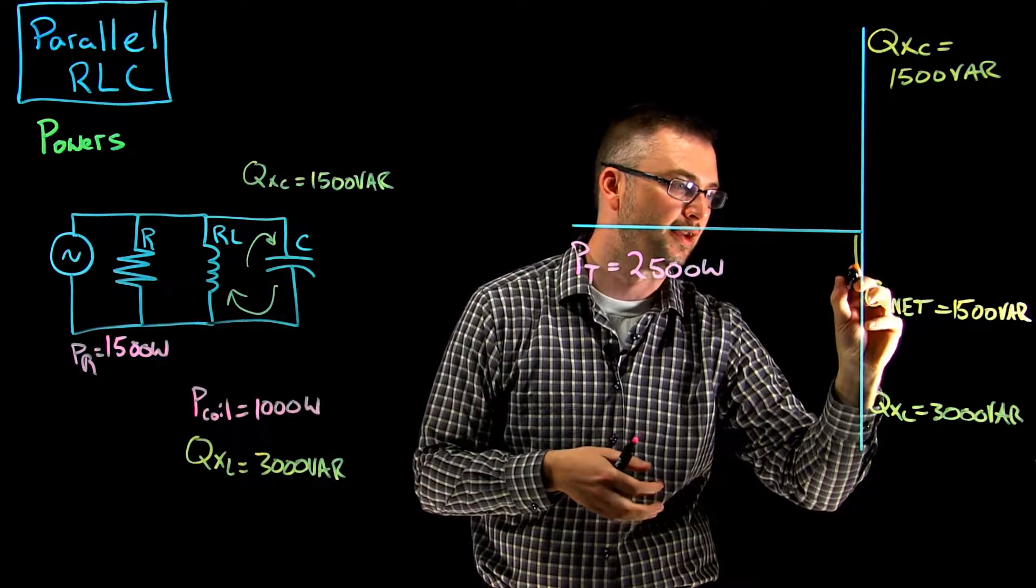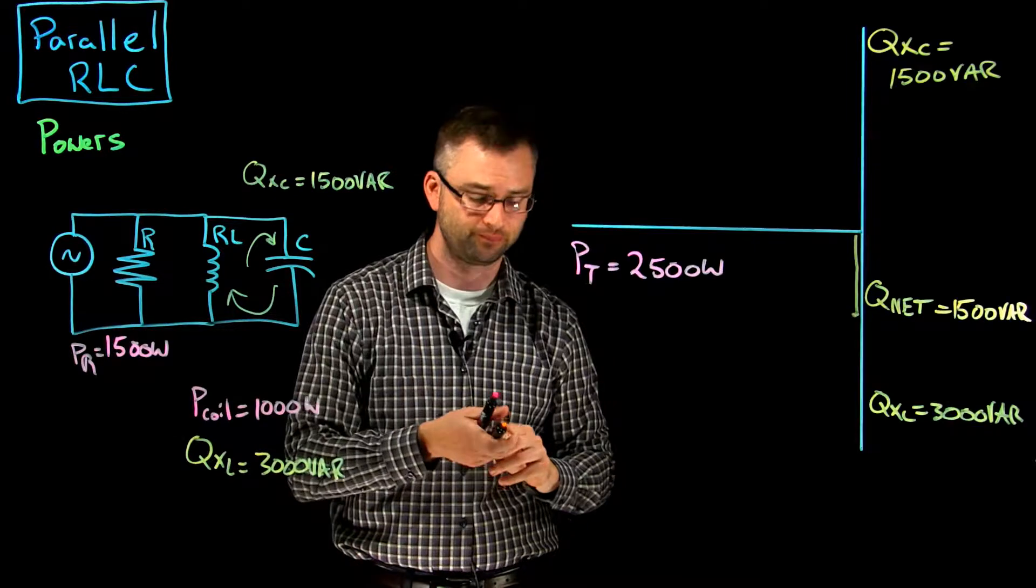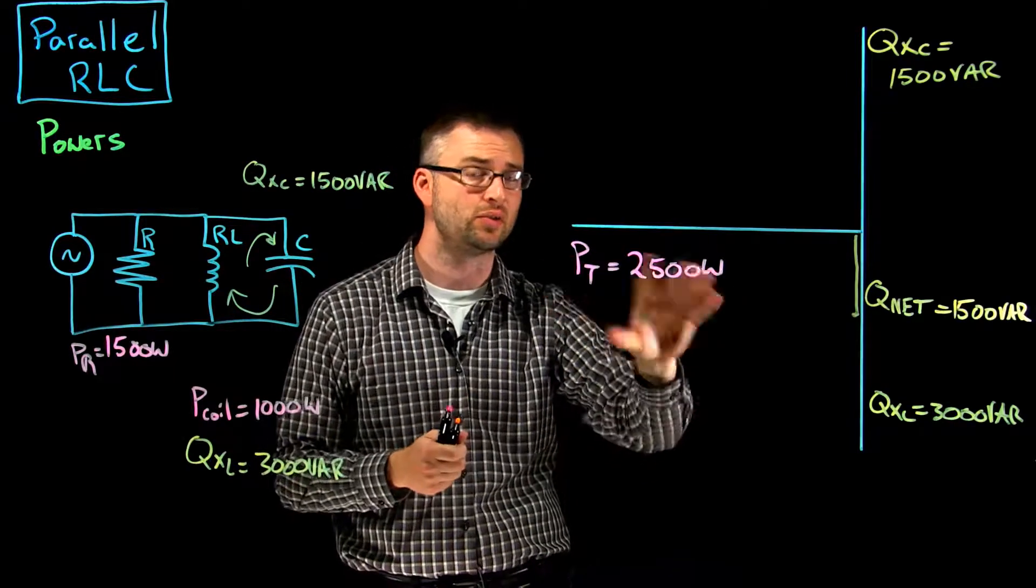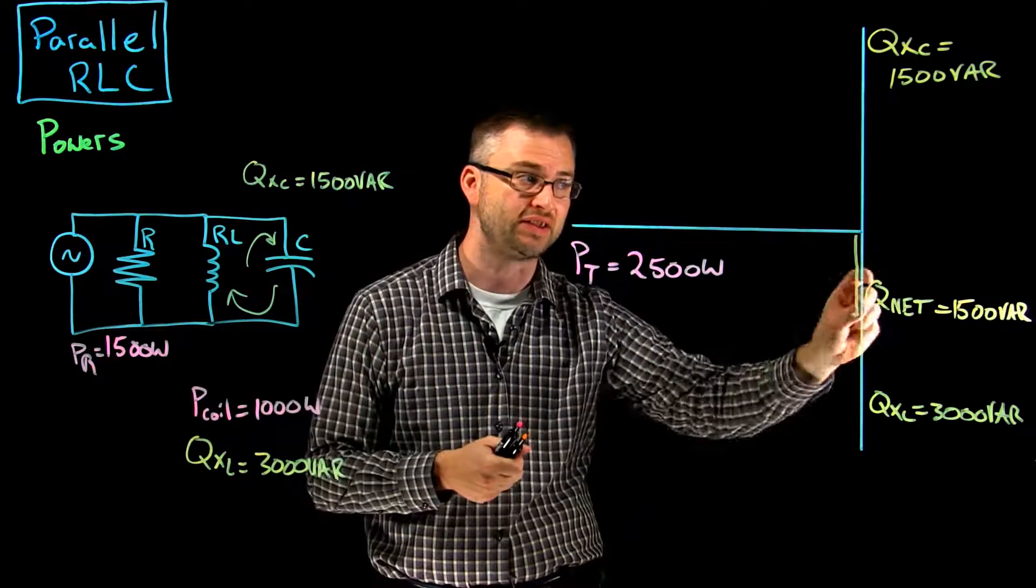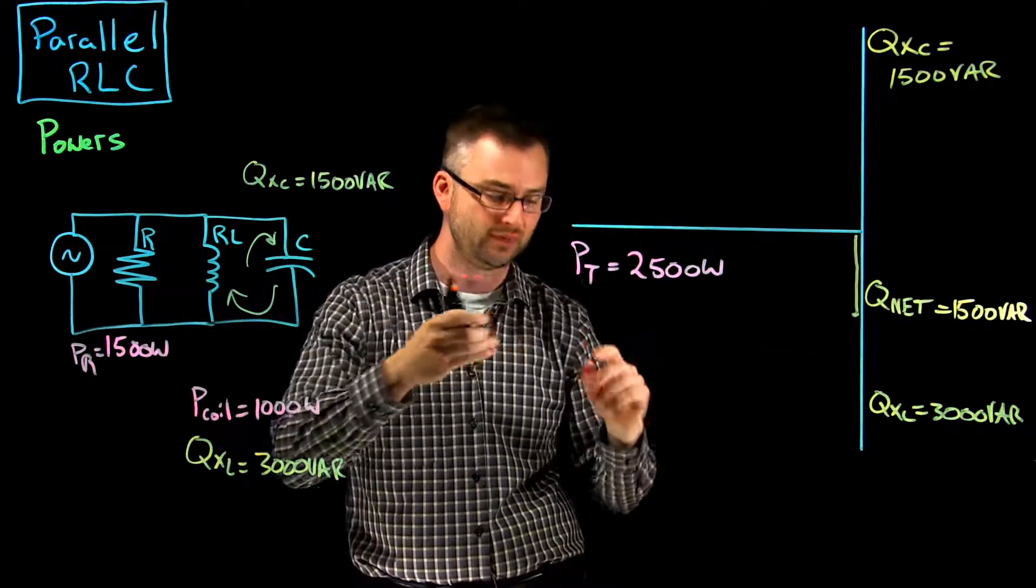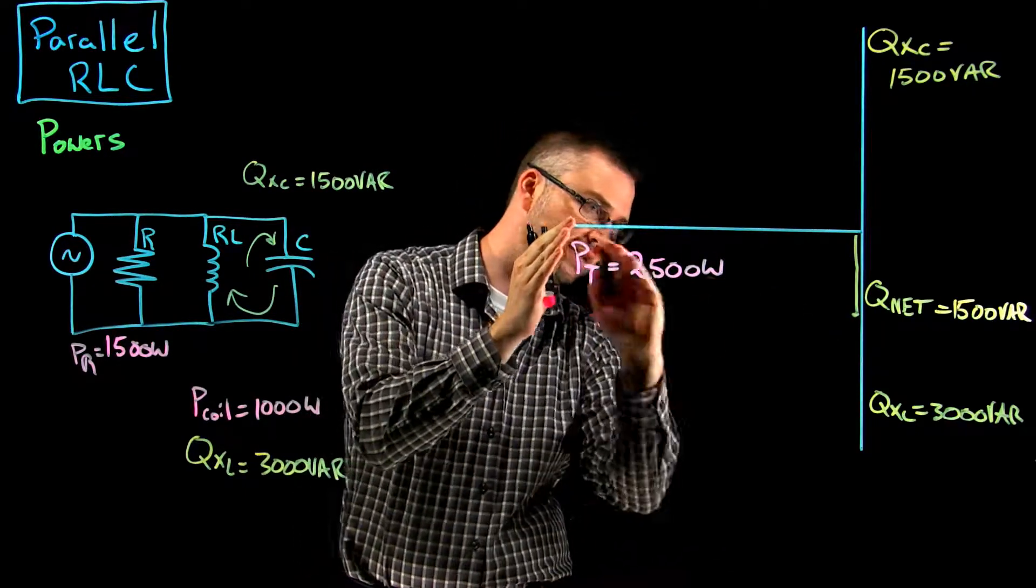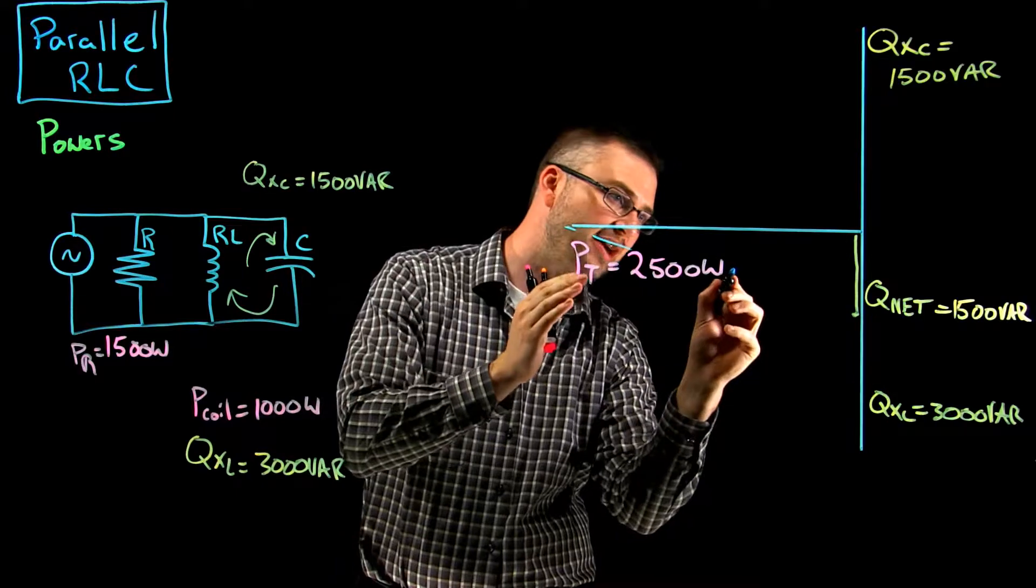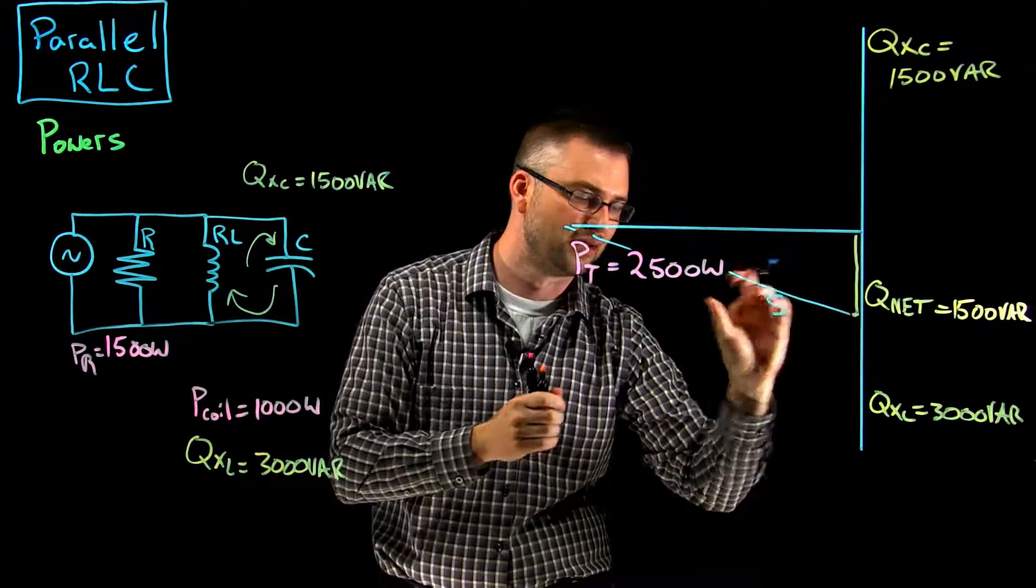This is the value that we want to use when we go ahead and solve for S total. P total is what it is, it's always there. We've got to solve for our Q net, that's the total that the source is going to have to provide. And then now we want to figure out what the S total is in the circuit. So my S total is down in this area here.